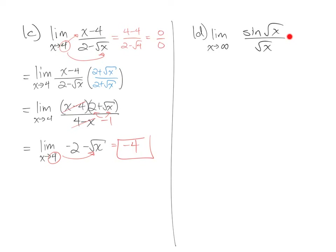Over here on the right side, we have the limit as x approaches infinity of sine of the square root of x over the square root of x. You might be very inclined to call this limit 1, because you're used to seeing this expression as a special trig limit as x goes to 0. But as you see here, this x does not go to 0 — it goes to infinity. So this limit is not 1.